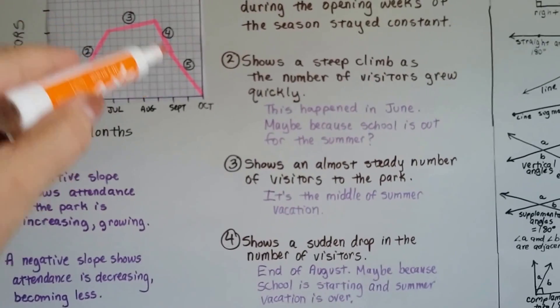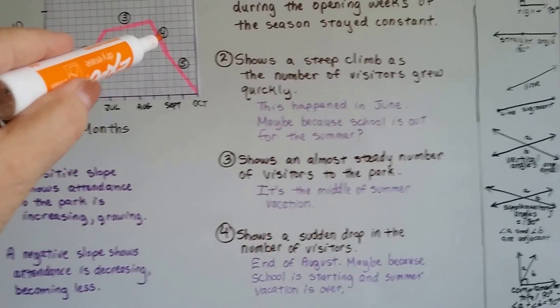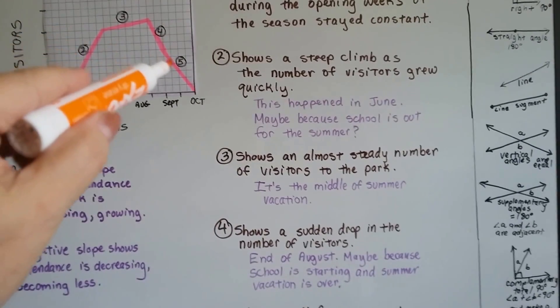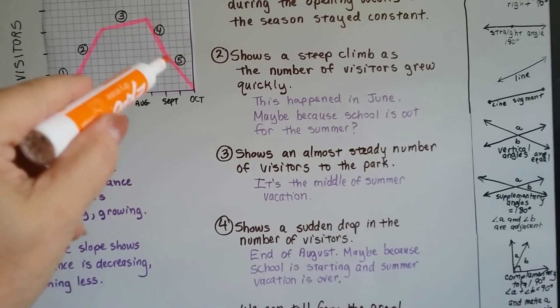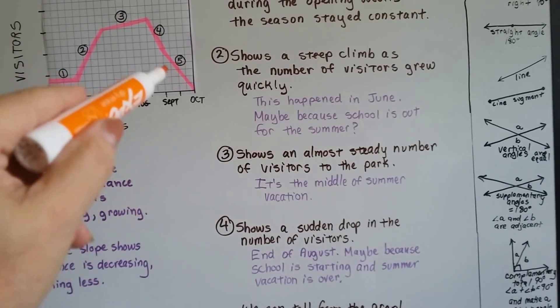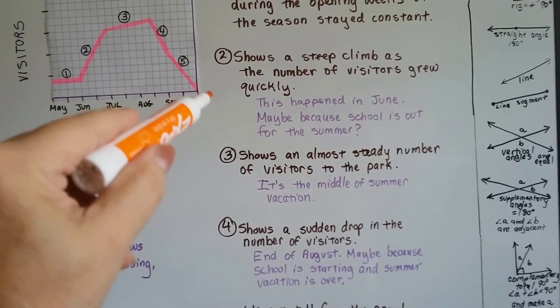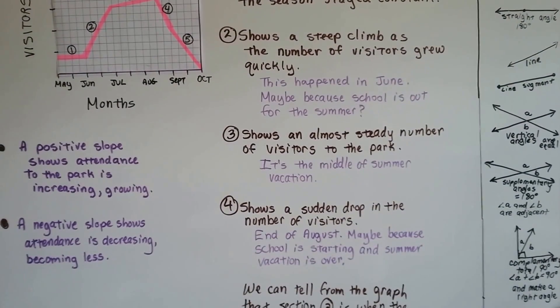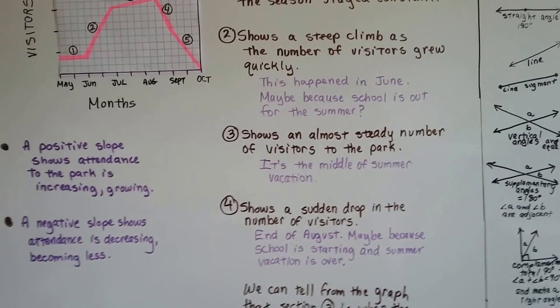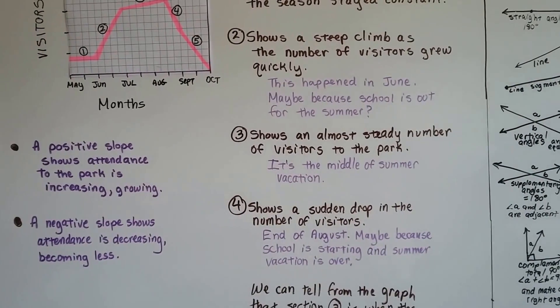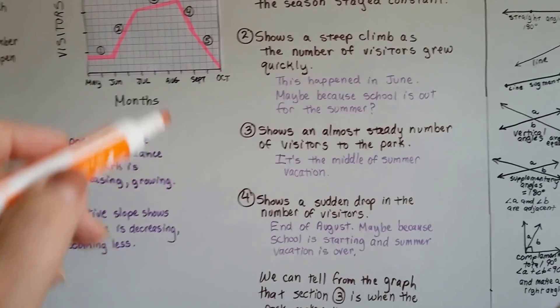Number 4 right here shows a sudden drop in the number of visitors. And then there's a very slight bend from this point down. It's hard to see, but from this point down it just falls. That's the end of August. Maybe because school is starting and the summer vacation is over.